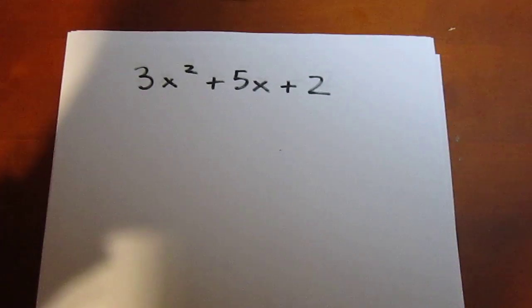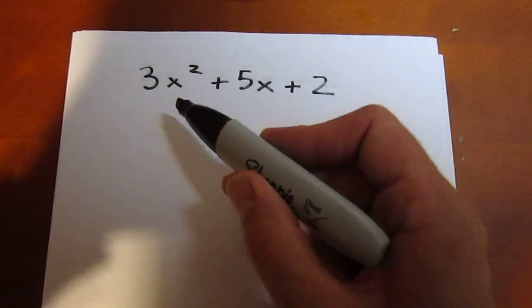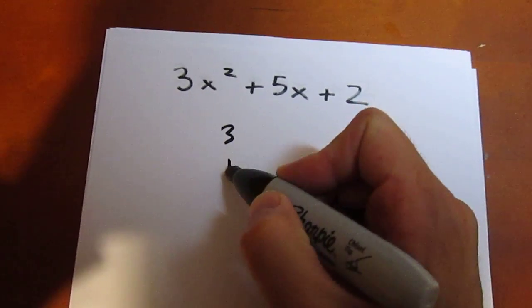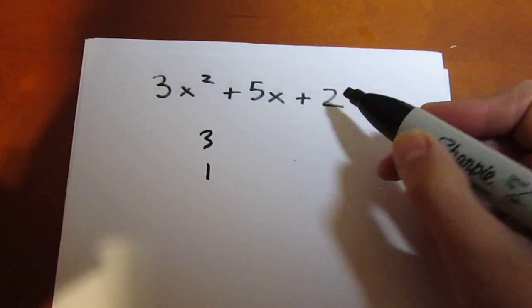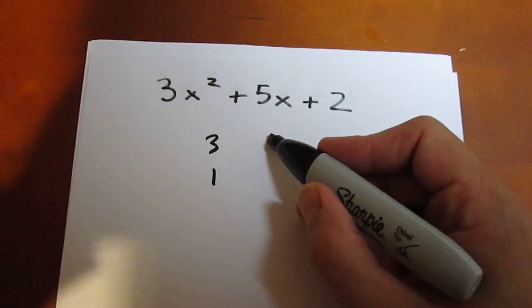For our next question, we'll use the criss-cross method. We want to think of two numbers that multiply to 3. Those will likely be 3 and 1. And we want to think of two numbers that multiply to 2. Those will likely be 1 and 2.